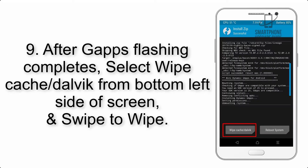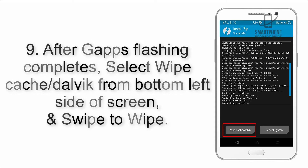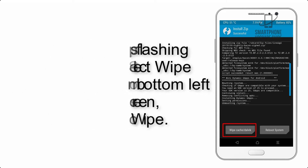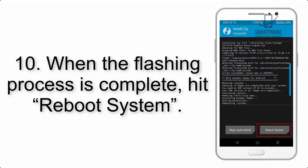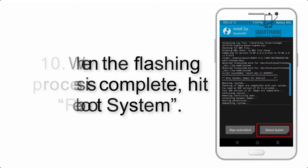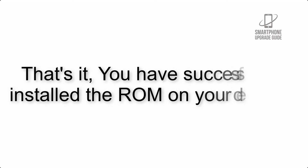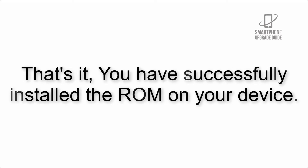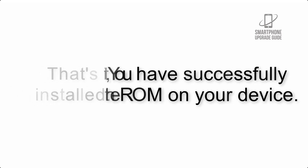Step 9: After GApps flashing completes, select Wipe Cache and Dalvik from the bottom left side of the screen and swipe to wipe. Step 10: When the flashing process is complete, hit Reboot System. That's it — you have successfully installed the ROM on your device.